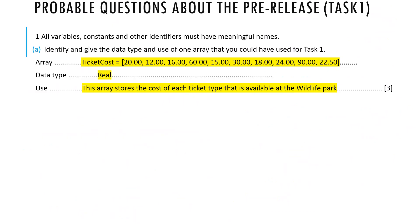Let's look at some probable past paper questions. First question: variables, constants, and other identifiers must have meaningful names. Identify and give the data type and use of one array you could have used in task 1. You could write ticket type or ticket cost. For example, ticket cost = [20, 12, 16, ...]. The data type is real, and the use of this array is to store the cost of each ticket type available at the wildlife park.